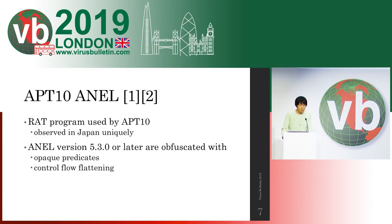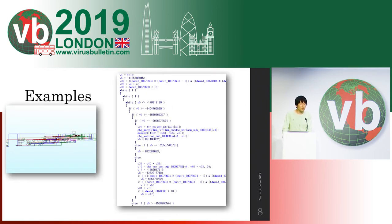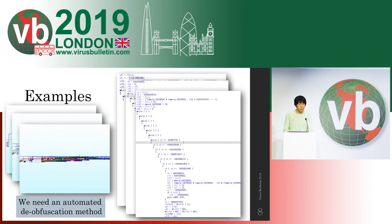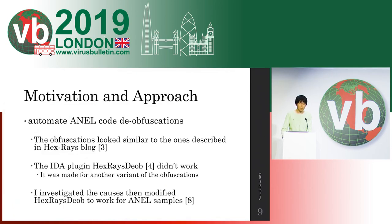These obfuscations are seen in APT10 ANEL malware observed in Japan uniquely, and the recent version samples are obfuscated with them. The previous example was very simple so we can read it manually, but there are more complicated functions in the samples — like this, like this, like this, and like this. The manual analysis for those obfuscations is painful and time-consuming, so we need an automated de-obfuscation method.